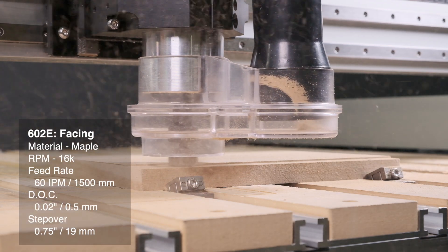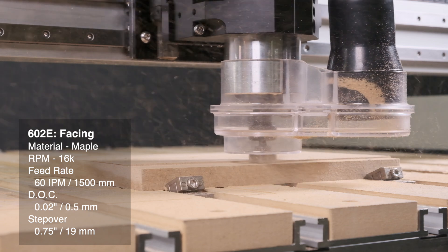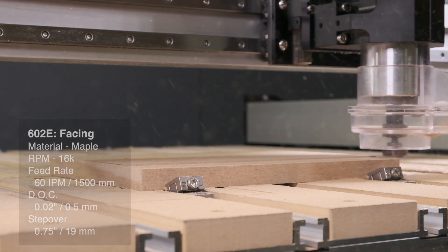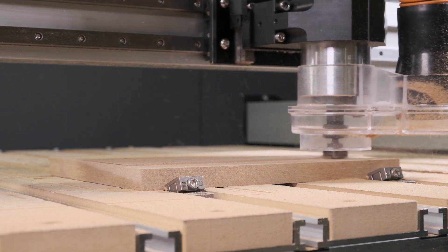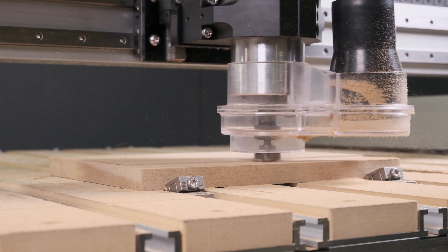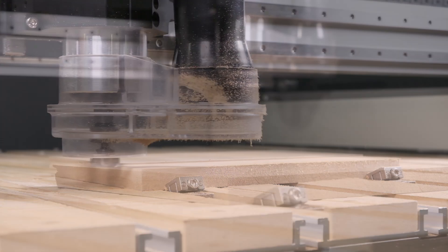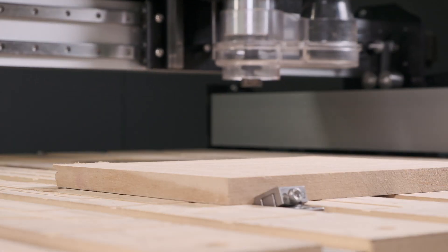Feed rates can start at around 60 inches per minute with a depth of cut of around 0.02 inches. That's about 1,500 millimeters per minute and a half millimeter depth of cut for you metric folks. A stepover of around 75% of the cutter diameter is a good place to begin for surfacing. Note that these are conservative starting points.